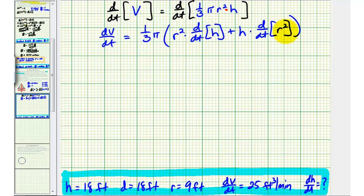Now let's go ahead and find these two derivatives, and then we'll solve for dh/dt. So we have dV/dt equals one-third pi times r squared times the derivative of h with respect to t, which would just be one times dh/dt, or dh/dt.